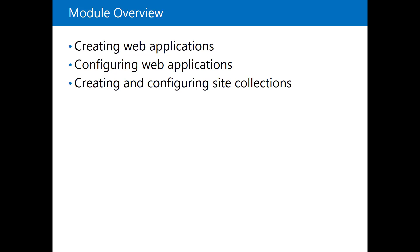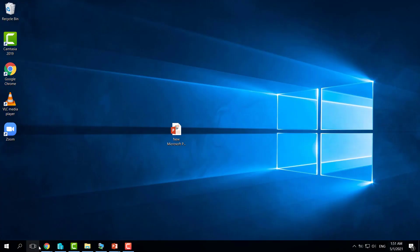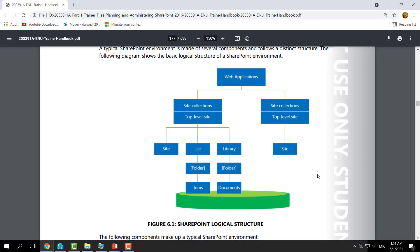Let's look at the diagram presented by Microsoft. A web application is a logical architecture that contains one or many site collections. Inside each site collection you will find everything: sites, lists, libraries, documents, folders. But to create a site collection, you first need to have a web application.